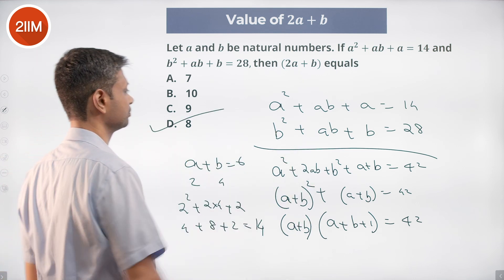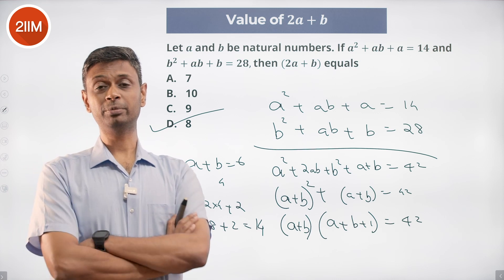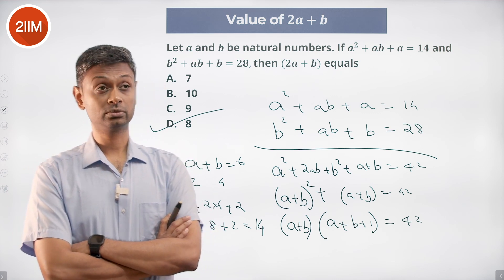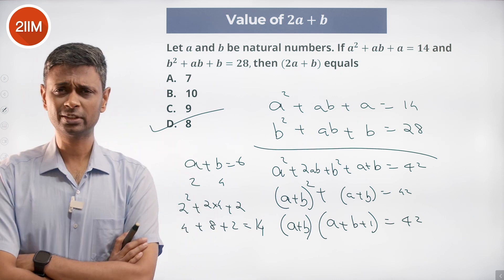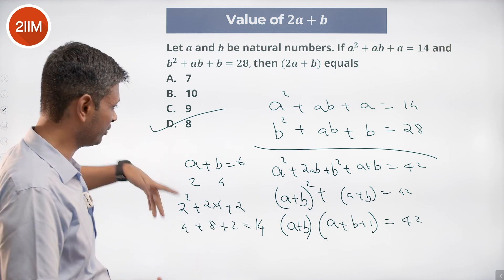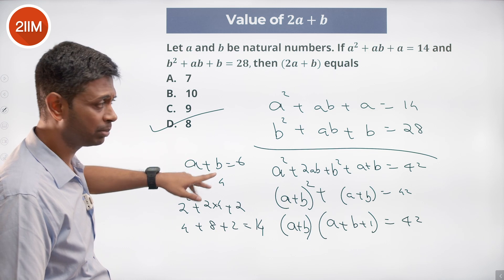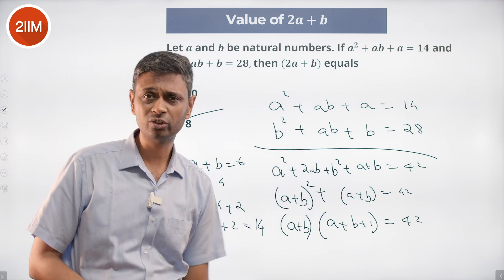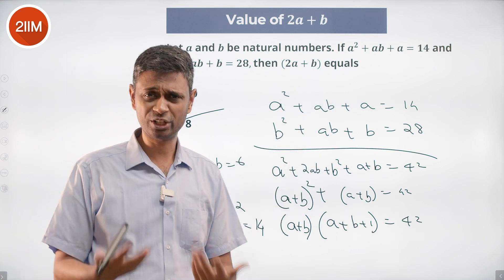We add these two, we get a plus b, a plus b, a plus b is 6. 3 comma 3 doesn't work. 2 comma 4 should work, then we are through. We can solve this. We can say a is 6 minus b, substitute that here, get that quadratic, solve and get a. That's the other more algebraic method.